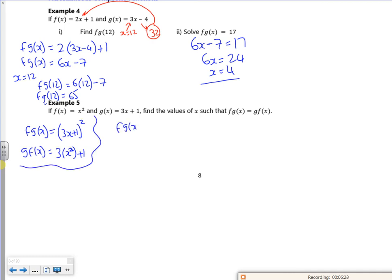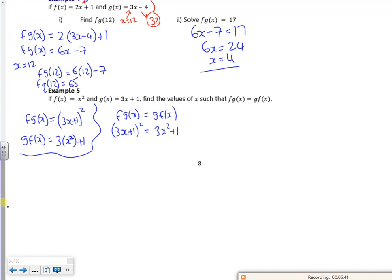So f of g of x equals g of f of x. So I'm saying that 3x plus 1 squared is 3x squared plus 1. So I'm going to have to expand my brackets here, aren't I? So what have I got then? So I've got 9x squared, 6x plus 1 is 3x squared plus 1. I've got 6x squared plus 6x is 0. I can take out 6x as a factor. So then that gives me 6x is 0. So x is 0. Going back to GCSE. x plus 1 is 0. x is minus 1. There. Perfect.